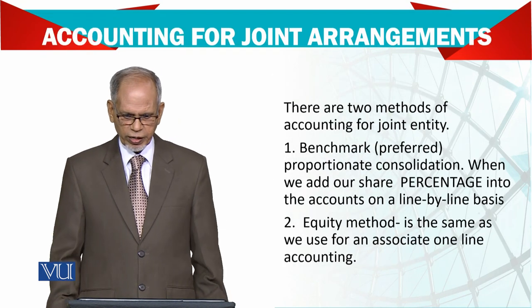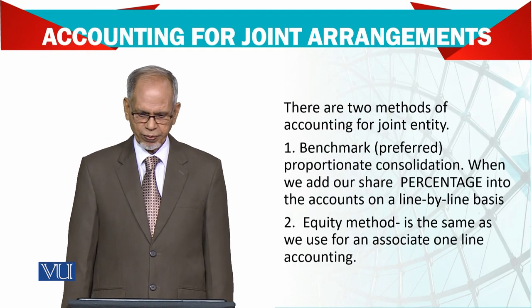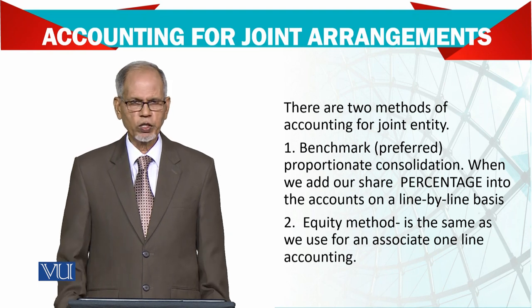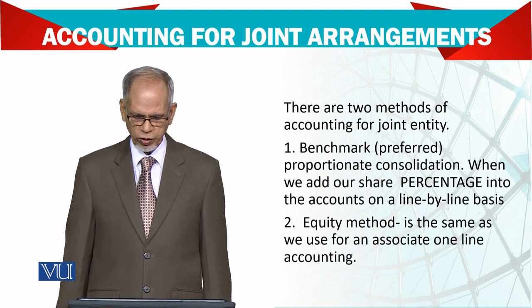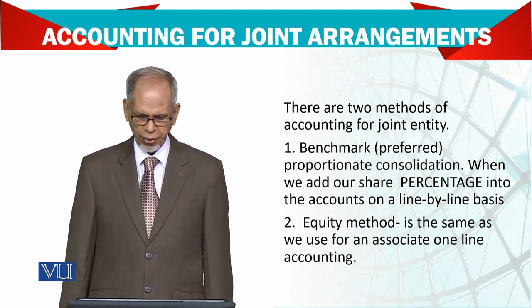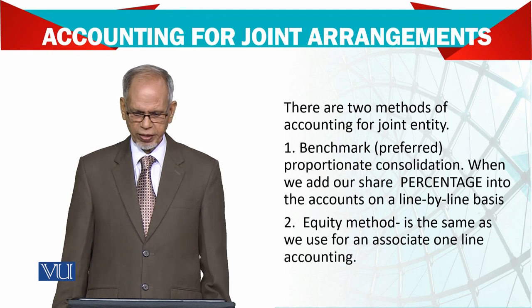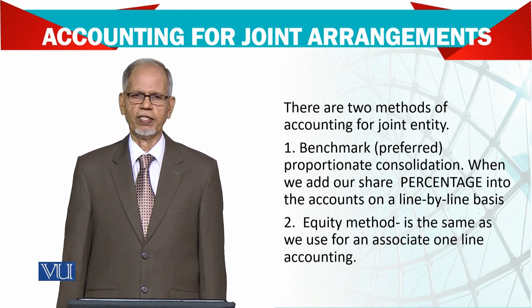There are two methods of accounting for joint entities. The benchmark treatment, which is preferred, and proportionate consolidation, where we add our share percentage into the accounts on a line-by-line basis.